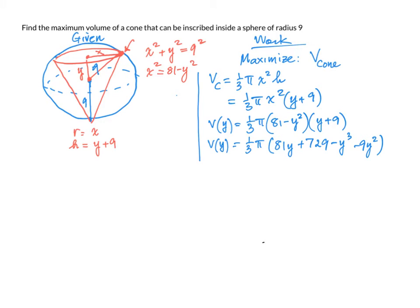Now, using the derivative to maximize volume, I have dv dy equals 1 third pi times 81 minus 3y to the second power minus 18y. I factor out 1 third pi. I have 3 times 1 third pi equals 27 minus y squared minus 6y.